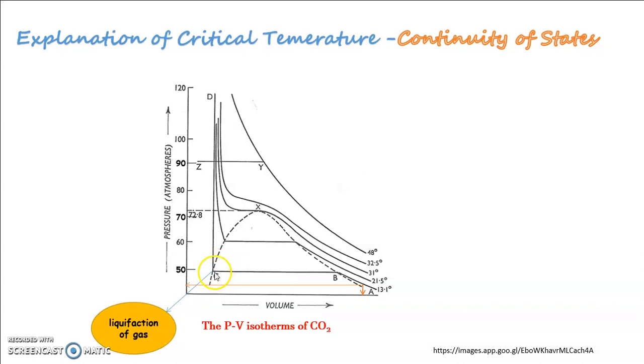Now, as the liquid is only slightly compressible, further increase of pressure produces only a very small decrease in volume. This is shown by a line Cd which is almost vertical. The liquid is less compressible so that as pressure increases, the line will be almost vertical.